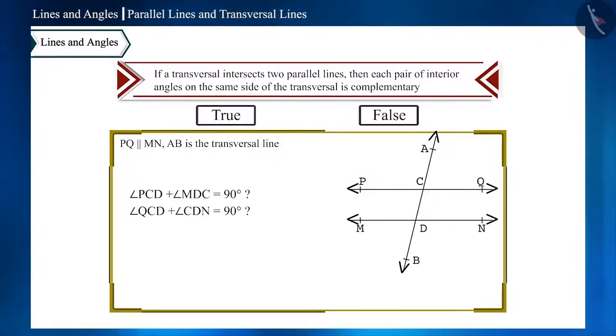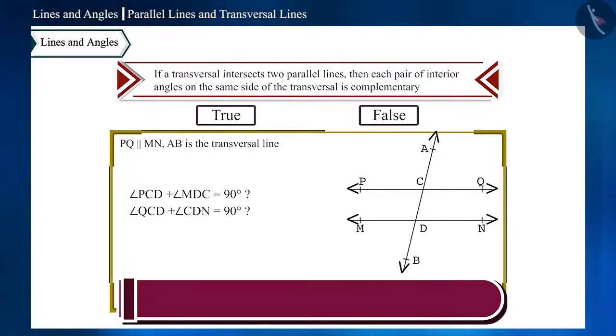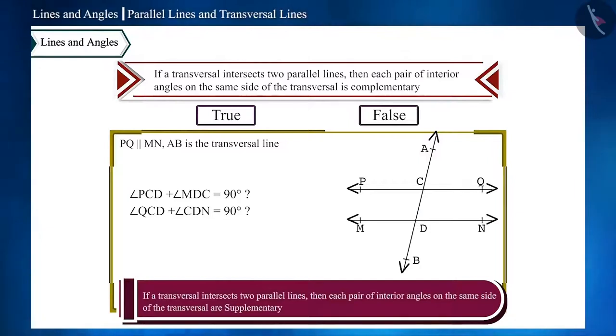To prove this, we can use this theorem. If a transversal intersects two parallel lines, then each pair of interior angles on the same side of the transversal are supplementary. That is, the sum of these two angles is not 90 degrees, but 180 degrees. Therefore, this statement is false.